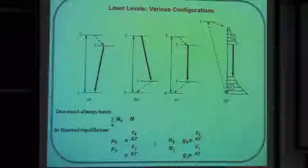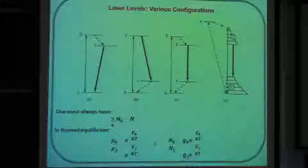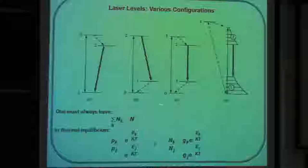Before we do that, there's something that is almost always shown: the different energy level configurations used for lasers. These first two are the three-level schemes, and the third one is a four-level scheme. The dark arrow that you see over here is the optical transition — that's where the lasing transition actually happens, where you get population inversion and gain.